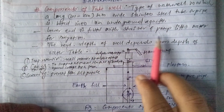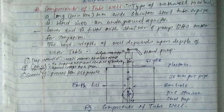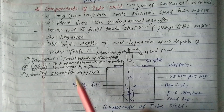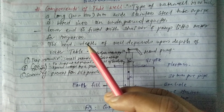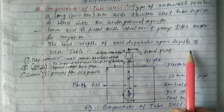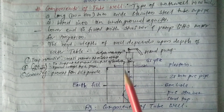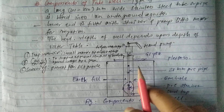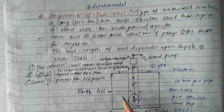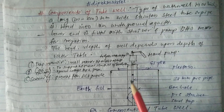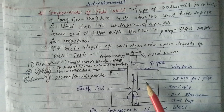The lower end is fitted with the strainer and the pump lifts water from underground for irrigation purposes. The required depth of the well depends upon the depth of the water table. The depth of the tubule mainly depends upon the depth of the water table — when the water table is at a shallow depth, we can easily construct the tubule.